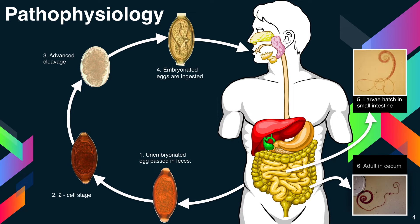You can see below the life cycle of Trichuris trichiura. First, the unembryonated eggs are passed into feces. The second stage is the cell stage, followed by the advanced cleavage stage. Then in the fourth stage, the embryonated eggs are ingested. Fifth, larvae hatch in the small intestine, and in the sixth stage, adults are produced in the cecum. The infective stage is the fourth stage, where the embryonated eggs are ingested. The diagnostic stage is the first stage — the unembryonated eggs passed into feces.